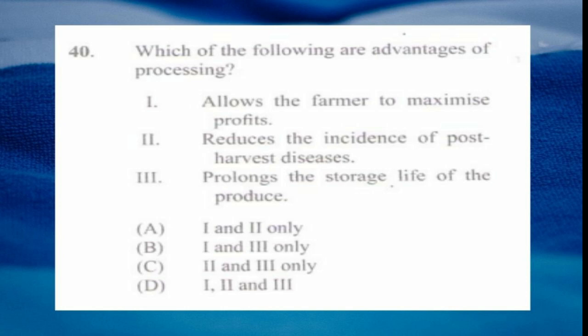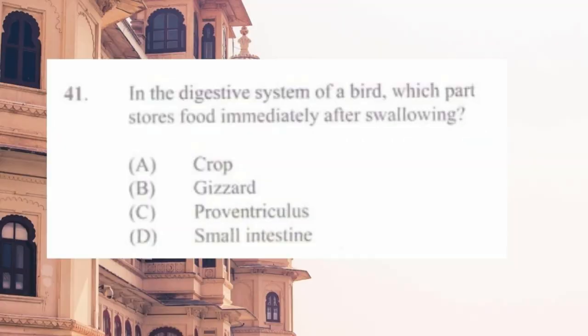Question number thirty-nine: post-harvest losses are least likely to occur in the process of a) storing, b) labeling, c) packaging, d) transporting. The answer is b) labeling. Question number forty: which of the following are advantages of processing? One) allows the farmer to maximize profits, two) reduces incidence of post-harvest diseases, three) prolongs storage life of the produce. The answer is d) one, two, and three.